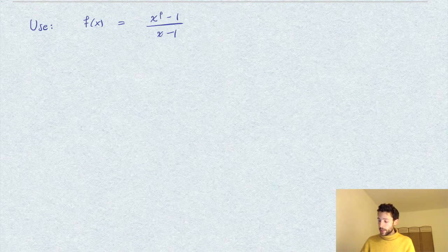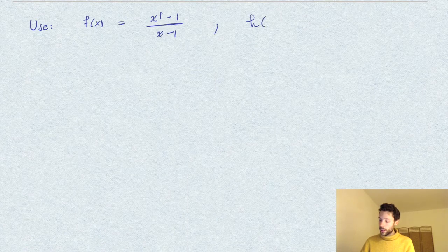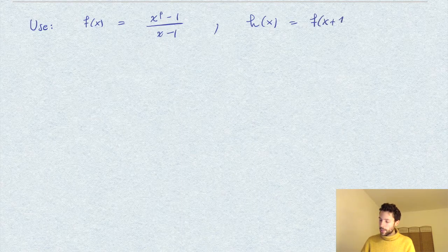So if you divide x to the p minus 1 by x minus 1, you get precisely f. So consider the shift: we take h of x to be the polynomial f of x plus 1.